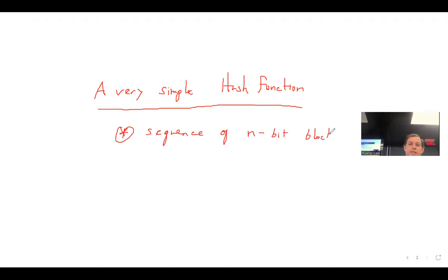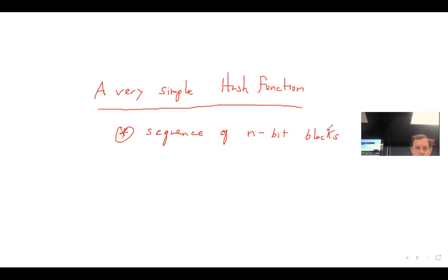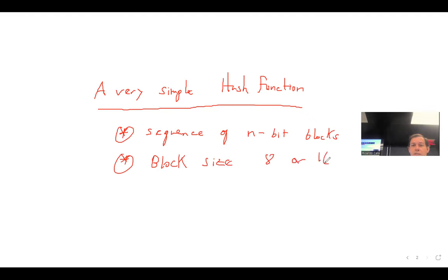I'll leave it to you guys to define this. You can take two paragraphs from Wikipedia or something in text and define your block size. The block size is basically all the letters - you can include spaces and so on. What's your block size? 8 or 16 - a multiple of 8. Either one should be fine. Let's say we're going to define block size to be 8 or 16.